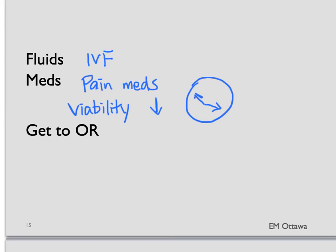Since the viability of the ovary decreases as ischemic time gets longer, our goal, once we think about the diagnosis, is to get the patient to the operating room for detortion of the ovary as soon as possible.